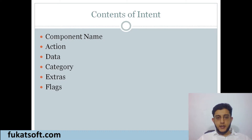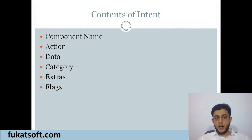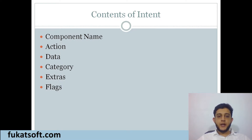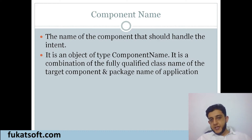یہ وہ سارے components ہیں جو intent کے ساتھ دینے پڑتے ہیں ایک activity کو launch کرنے کے لیے۔ ان میں سے سارے components دینا ضروری نہیں — ایک یا دو سے بھی کام چل سکتا ہے۔ ان components میں Component Name، Action، Data، Category، Extras اور Flags شامل ہیں۔